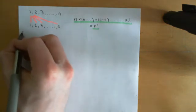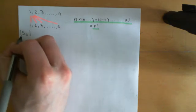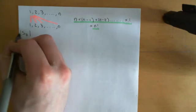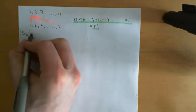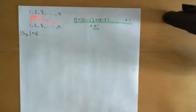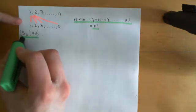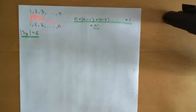Now what I want to study is S3. The order of S3 — we often write the order of a group using vertical lines on either side of the group name — will be 3 factorial, and 3 factorial is 6 (three times two times one). So there are going to be six possible permutations of this set of three things, all represented by symbols in S3.